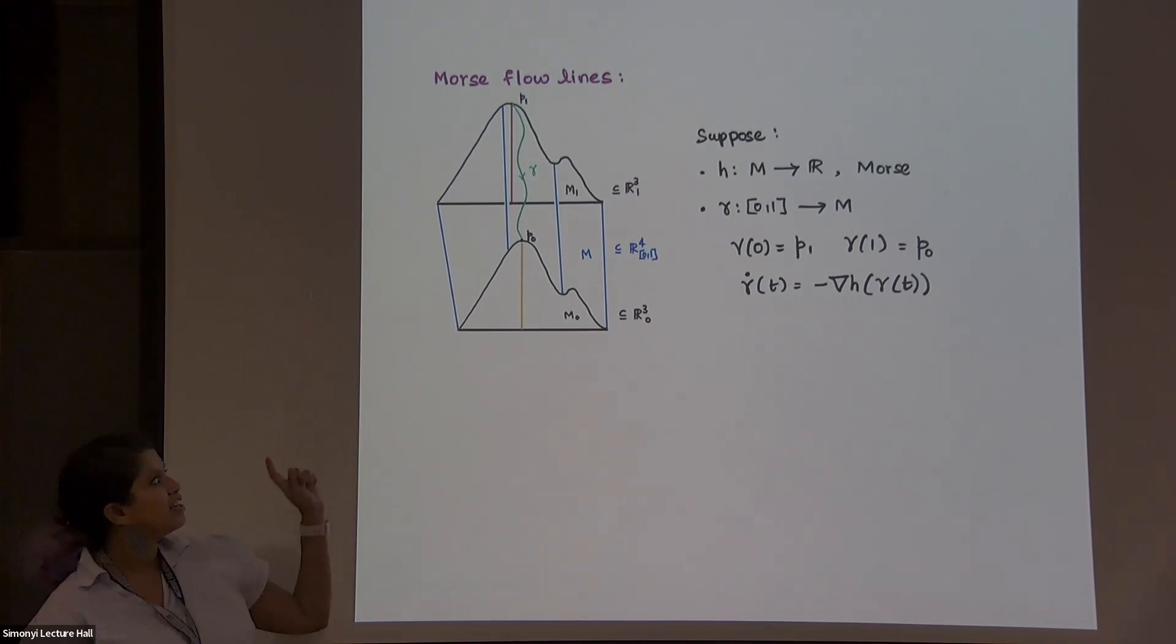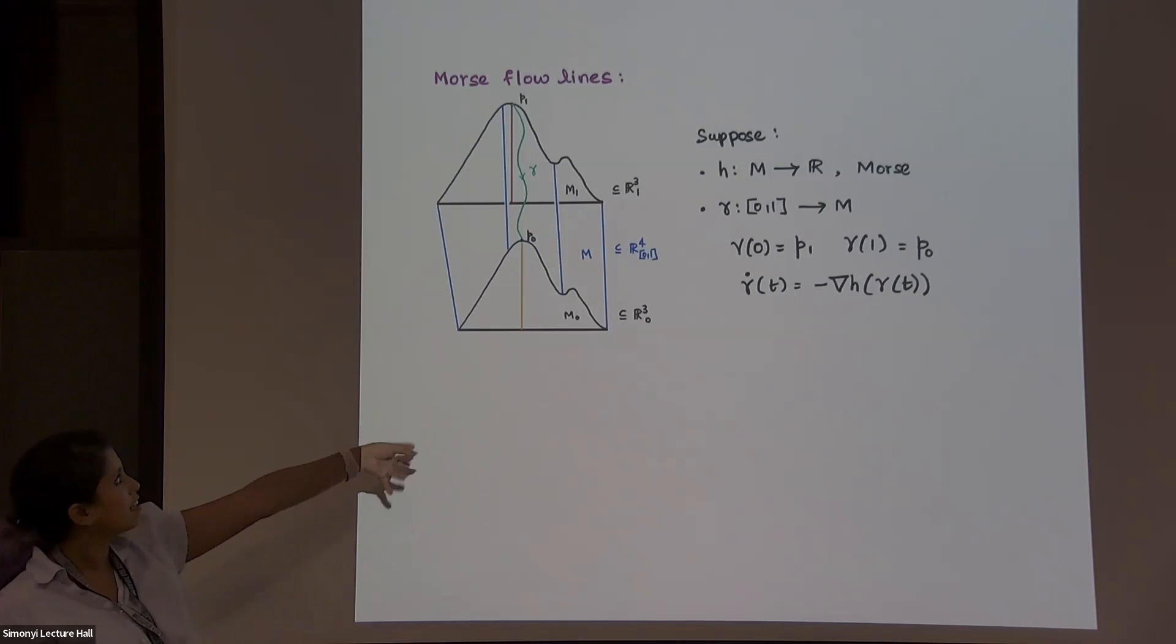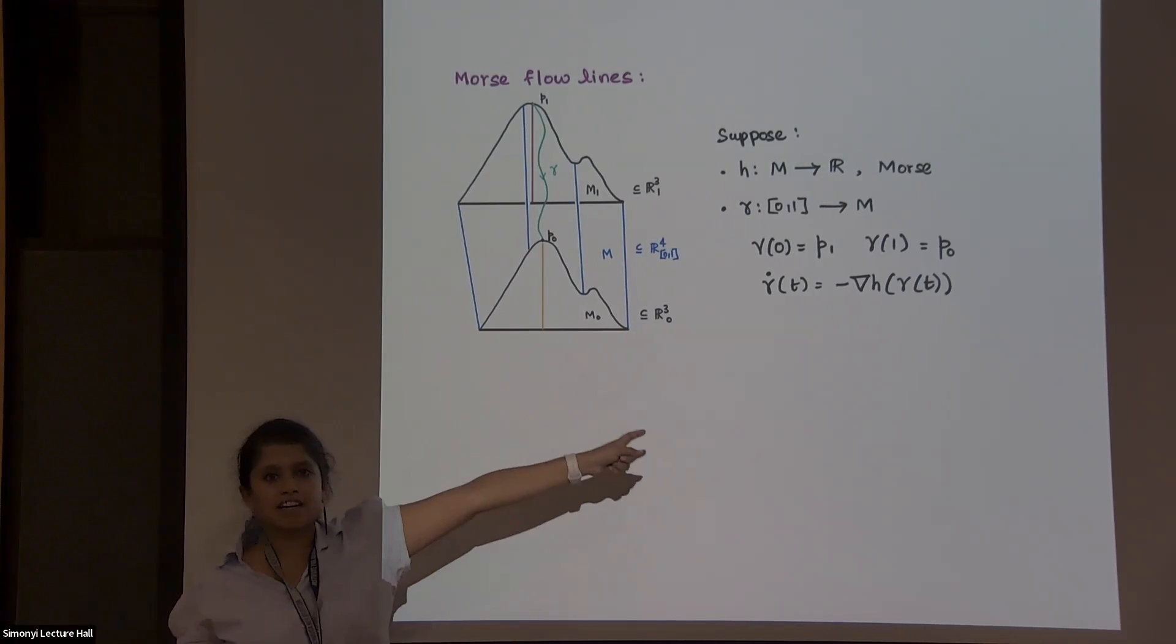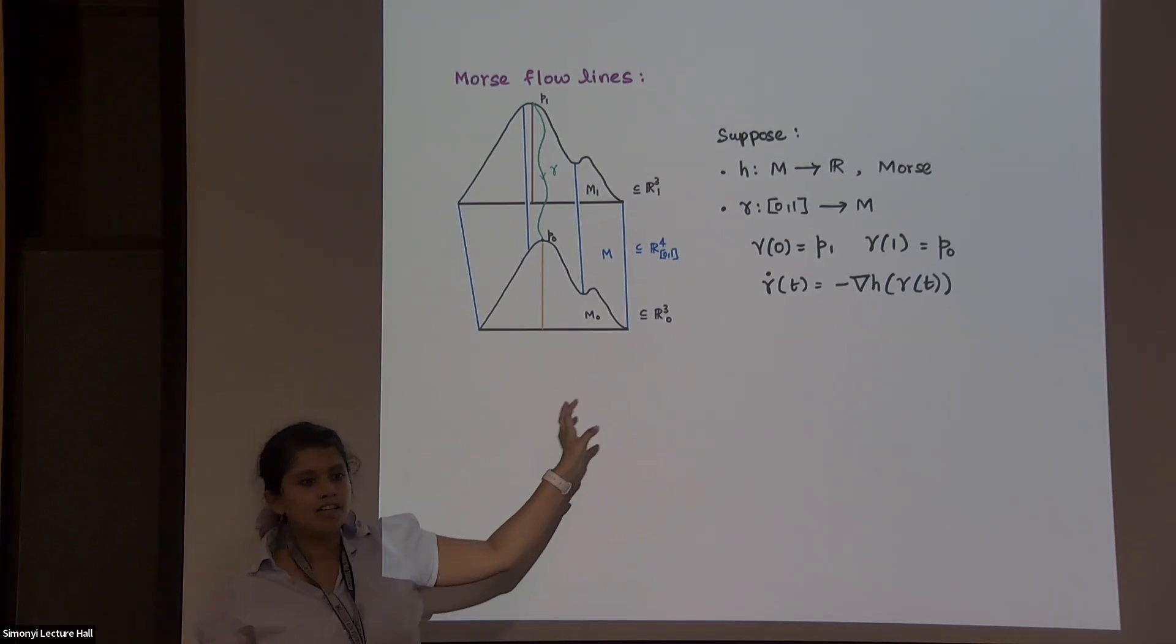So what is a flowline? It's a path in the entire manifold M, such that the starting and ending point here, I've chosen them to be peak one and peak zero. And the differential is the gradient of my height function.